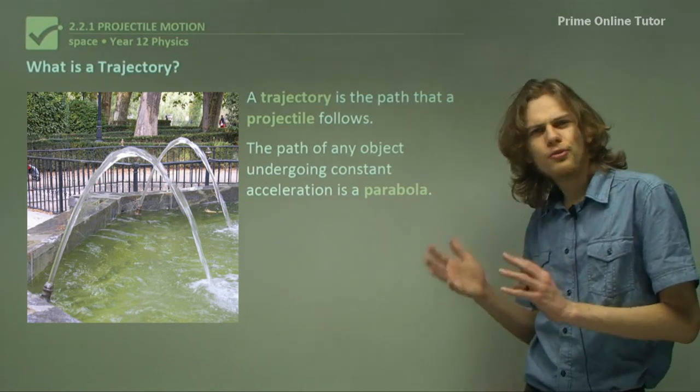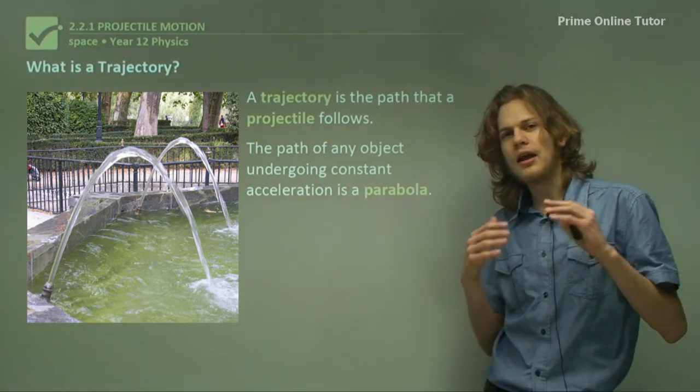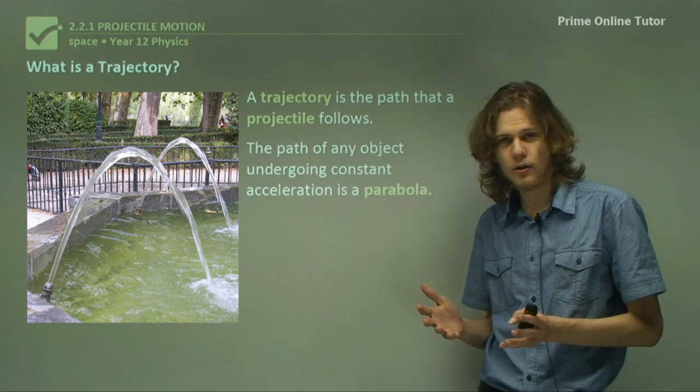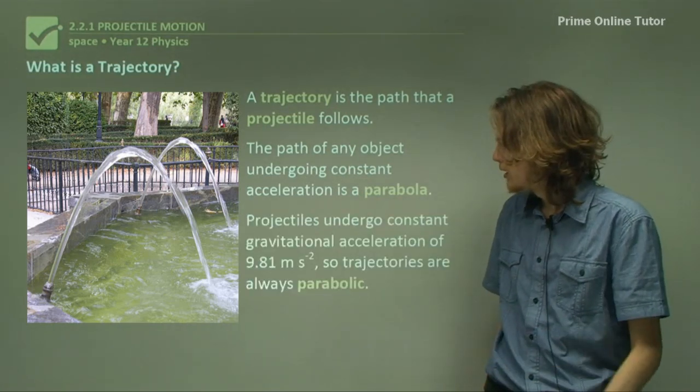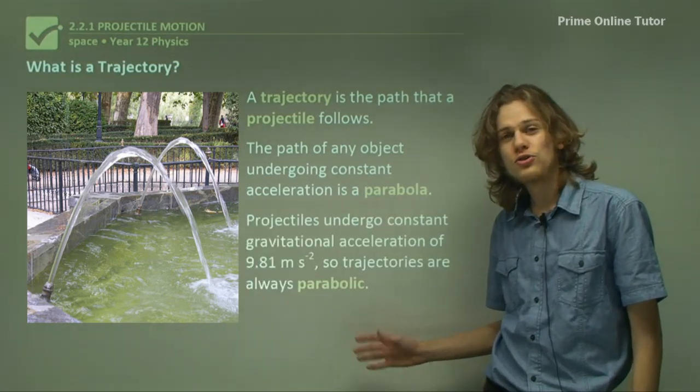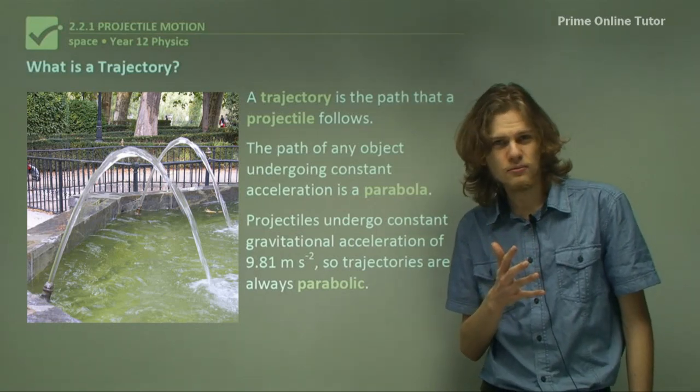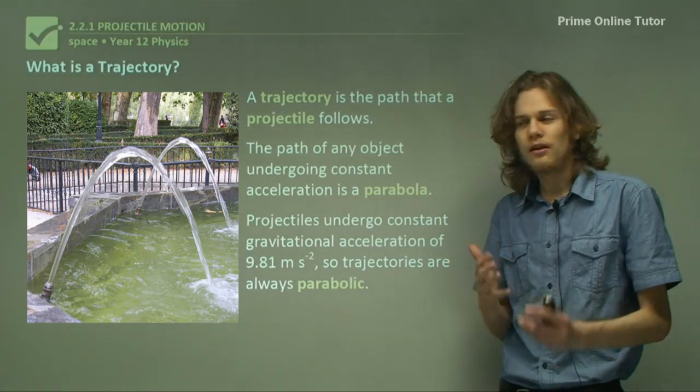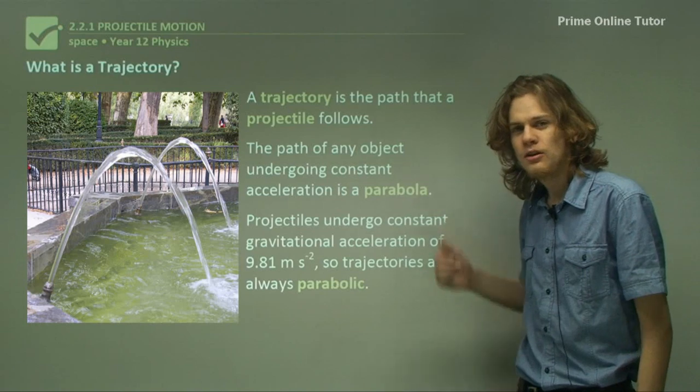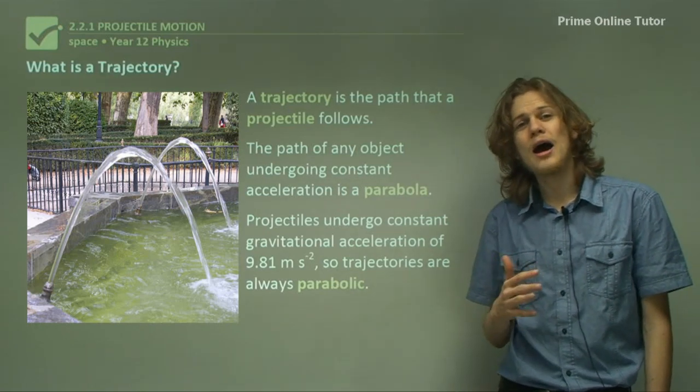What does it say about the trajectory, which is the path that a projectile follows? Projectiles always have constant acceleration due to gravity, which means that they'll move in a parabola. So trajectories are always parabolic.